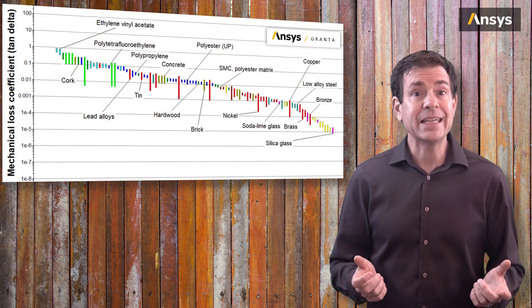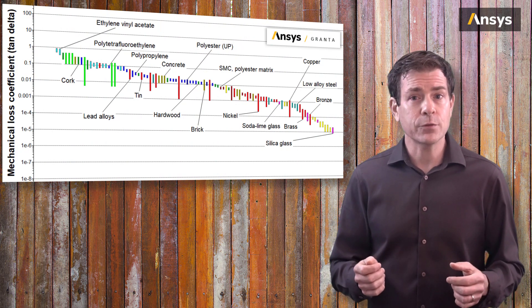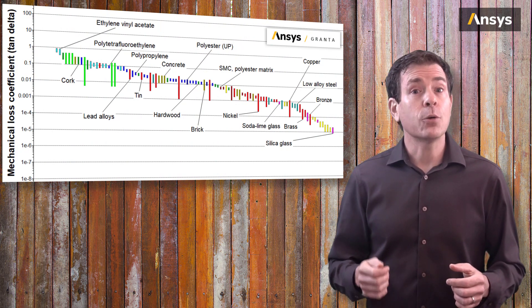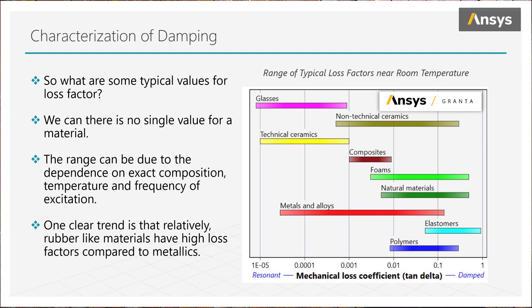What are some typical values of damping? Here is a simple chart that can give some idea of the range, but notice there is not a single value for a given material. There are many different alloys, compositions, treatments that can change the damping, so you will notice a large range of these loss factors reported at room temperature. For example, notice the very large range for plastics and rubbers.